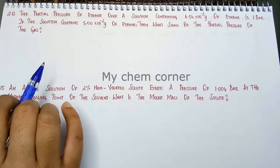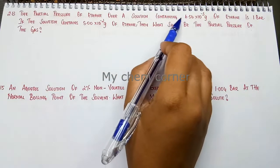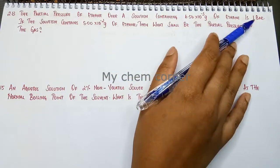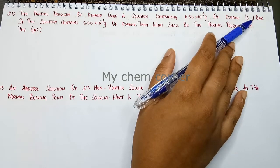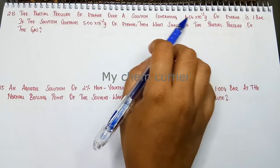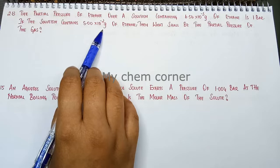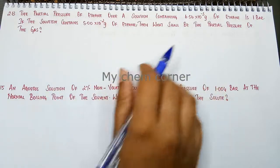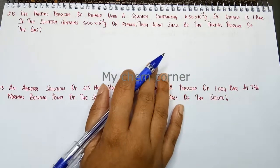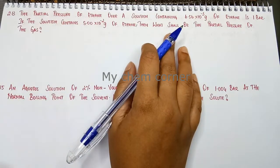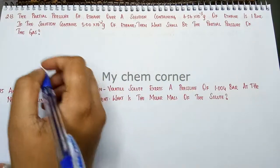So here, partial pressure of the gas ethane over the solution is given and they have given some weight. Similarly, another weight is given. For that, you need to calculate what is the partial pressure. When you have partial pressure and the weight of the gas given, it is going to follow Henry's law.